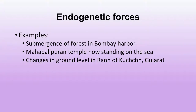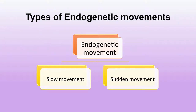Earth movements are constructional in nature and are responsible for building different types of landforms. Some examples of endogenetic forces and resultant landforms are submergence of forest in Bombay harbour, Mahabalipuram temple now standing on the sea, and changes in ground level in Rann of Kutch, Gujarat. There are two main types of endogenetic forces: slow movement and sudden movement.